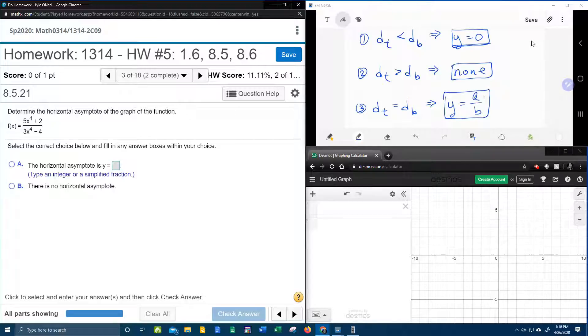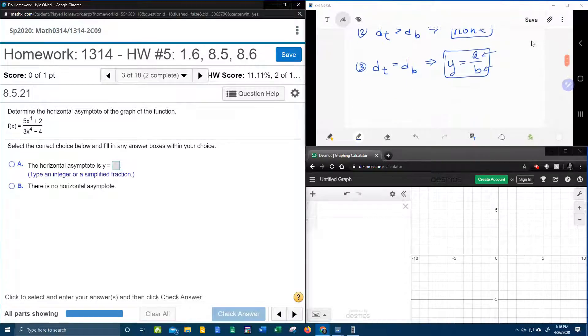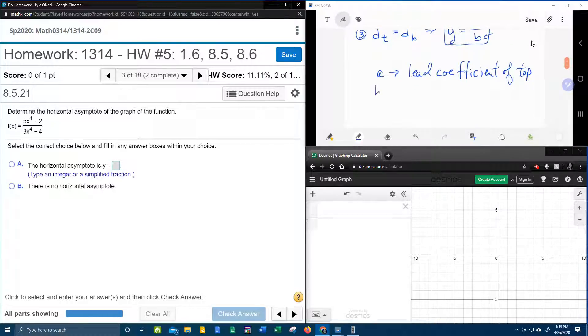And you're going to need to know where do I find a and where do I find b. Well, if I make a list here, a is the lead coefficient of the top. And b is the lead coefficient of the bottom.